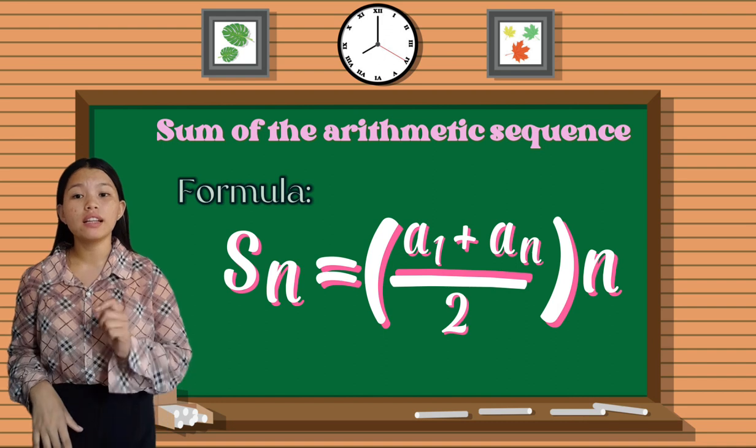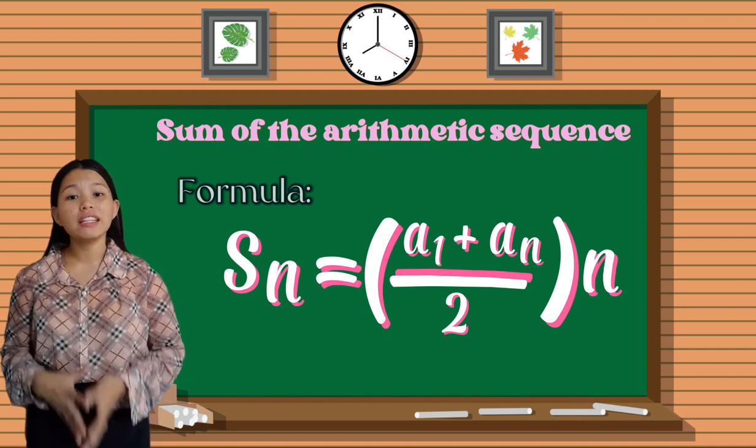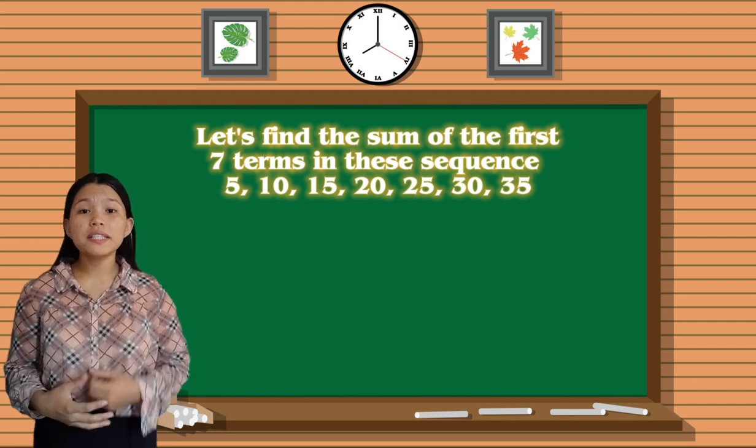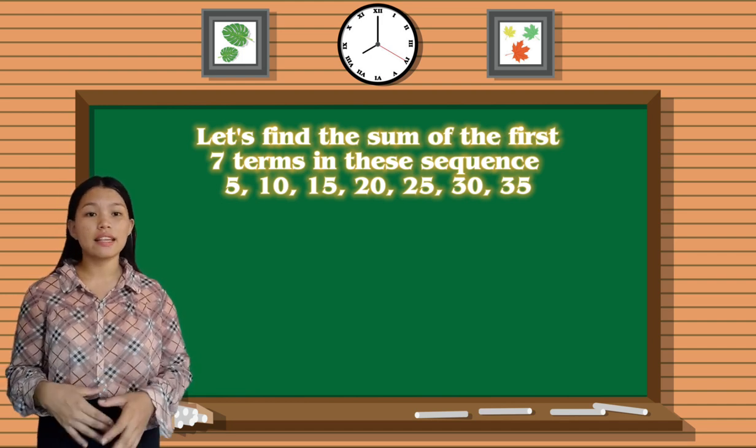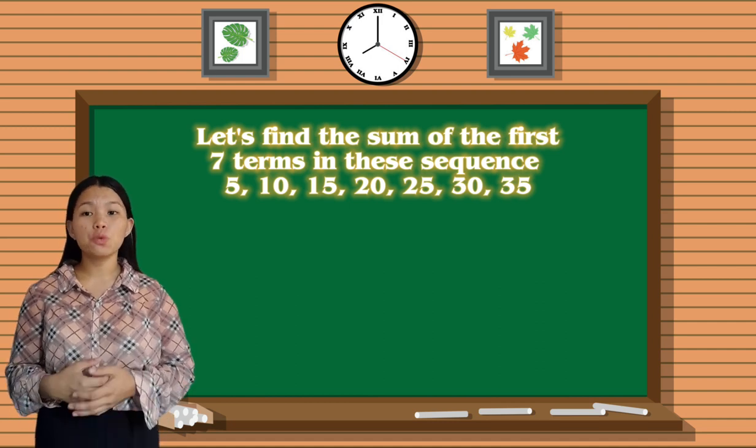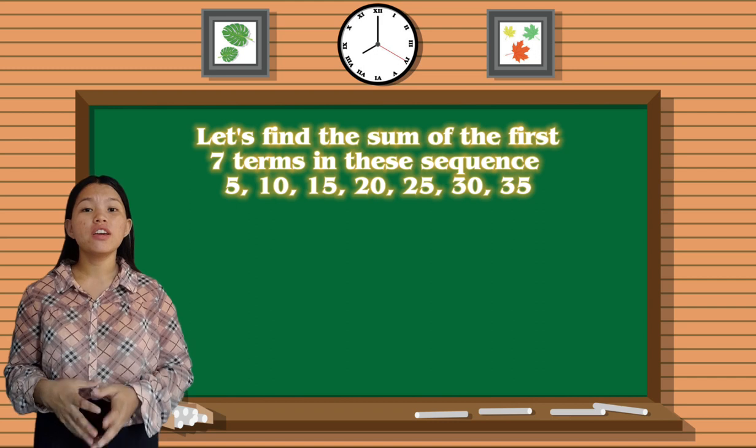S_n is the partial sum of a series of a few terms and is equal to (a_1 + a_n) / 2 × n. So let's find the sum of the first 7 terms in this sequence: 5, 10, 15, 20, 25, 30, and 35.